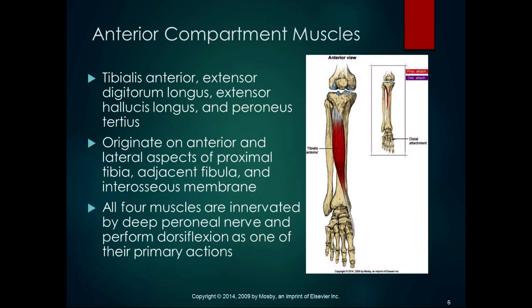The tibialis anterior is the primary dorsiflexor and inverter of the foot and ankle. It originates on the proximal two-thirds of the lateral surface of the tibia and interosseous membrane, courses anteriorly to the medial malleolus, comes around the medial side of the foot, and attaches to the medial cuneiform and base of the first metatarsal on the medial and plantar surfaces. Because it attaches on the plantar surface with a slight lateral-to-medial line of pull, it performs inversion. It gets the deep peroneal nerve.